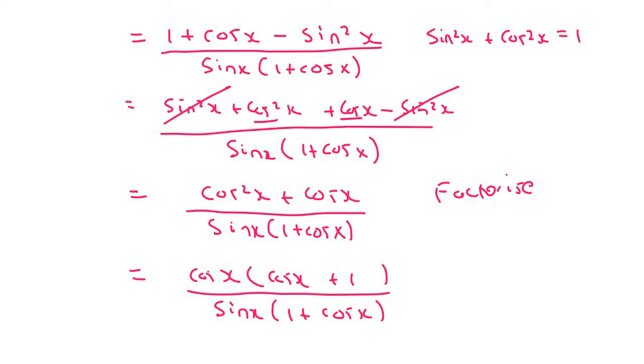Now cos x plus 1 and 1 plus cos x, they are the same, so they can cancel. And so we are left with cos x over sin x, and that was what we were trying to prove. And so the left hand side is in fact equal to the right hand side.